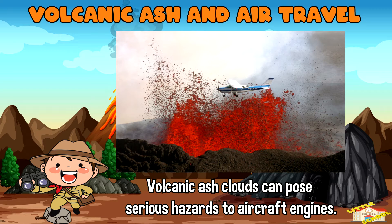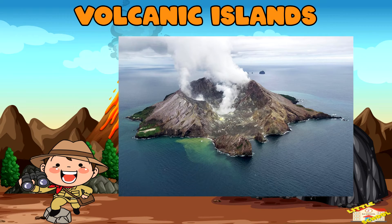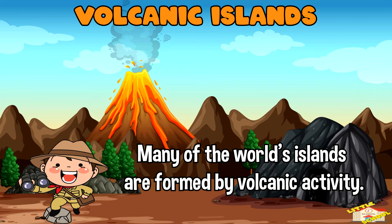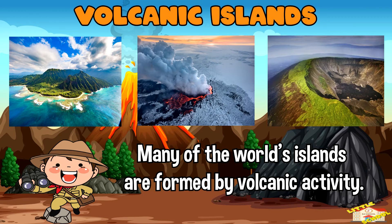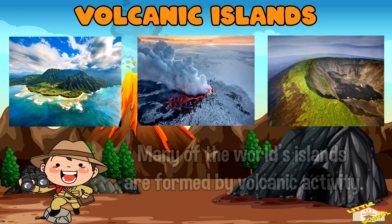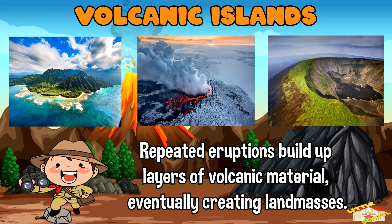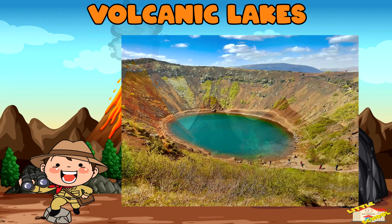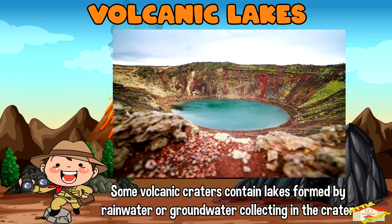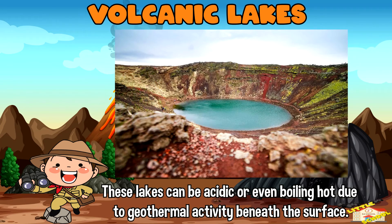Volcanic islands: many of the world's islands, including Hawaii, Iceland, and the Galapagos Islands, are formed by volcanic activity. Over time, repeated eruptions build up layers of volcanic material, eventually creating land masses.